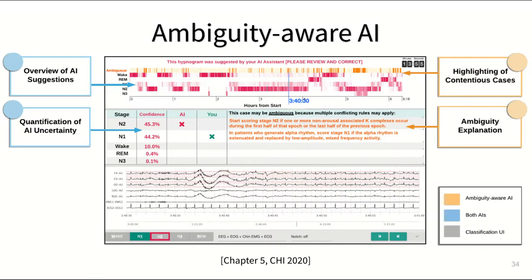You can see our interface here. We were curious to see if experts would pay any attention to these ambiguity explanations that we showed to them, and if yes, how would that affect their decisions?